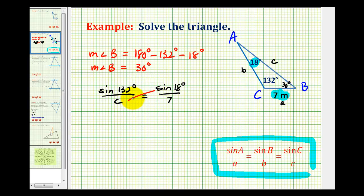So we'll have C sine 18 degrees must equal 7 times sine 132 degrees. So now we'll divide both sides by sine 18 degrees. And this quotient will give us the length of side C.